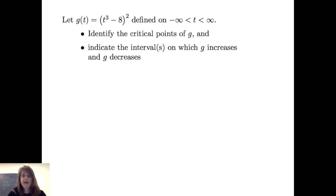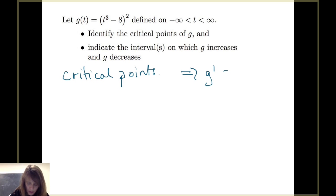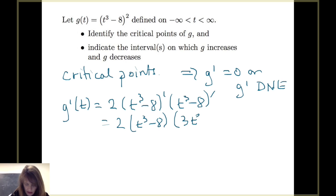Let's consider an example. Suppose we let g of t equal t cubed minus 8, quantity squared, defined on the real number line. We want to identify the critical points of g and indicate the intervals on which g increases and decreases. Taking the derivative using the chain rule, g prime of t equals 2 times (t cubed minus 8) times 3t squared. Since this is a polynomial, there are no places where the derivative does not exist.